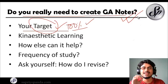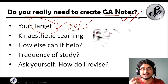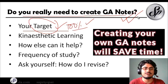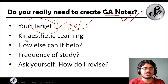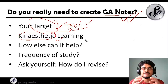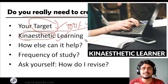We are actually creating our General Awareness notes not because we want to waste time, but because we want to save time — save time in revision, save time in making ourselves efficient at recollecting information. There is something called kinesthetic learning. Kinesthetic learners are those who love to write, and after writing they can recollect things in a much easier manner.